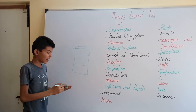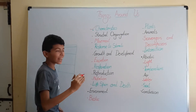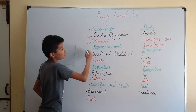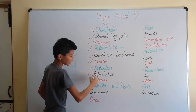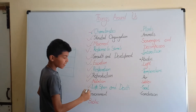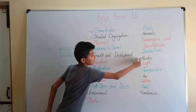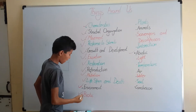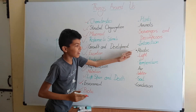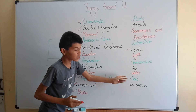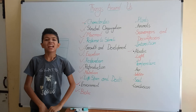So friends, let's recap what we learned in this chapter. We learned the characteristics of living things: structural organization, movement, response to stimuli, growth and development, excretion, respiration, reproduction, nutrition, and life span and death. We also learned about the environment and its two types of components — biotic components including plants, animals, scavengers, and decomposers, and abiotic components including light, temperature, air, water, and soil. I hope this video was helpful in understanding Things Around Us. Thanks for watching!